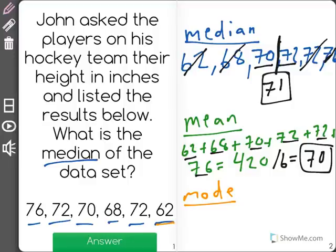62 shows up once, 68 once, 70 once, 72 shows up two times.